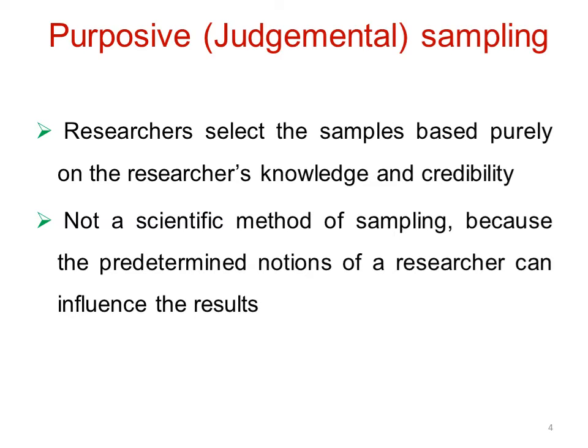Purposive sampling — also called judgmental sampling — is where samples are selected from a specific group, such as the university. It is not randomized. The researcher selects based on judgment, and the result may be affected by the researcher's bias.